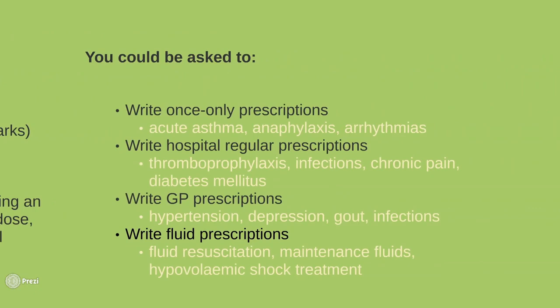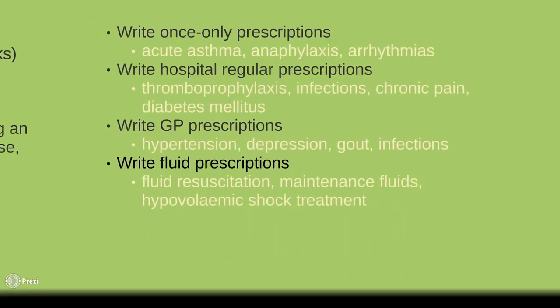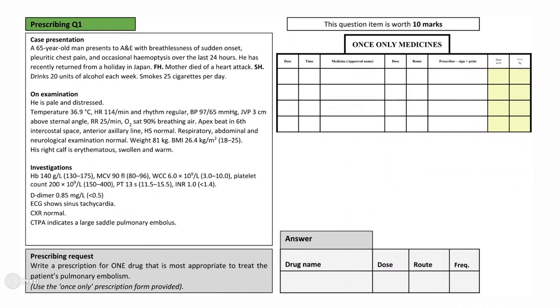So now that the basics of this section have been covered, let's place this into context by walking through some questions. Question 1: This is a 65-year-old man who presents to A&E with sudden onset breathlessness, pleuritic chest pain, and occasional hemoptysis over the last 24 hours. He has recently returned from a holiday to Japan. He has no past medical history of note and is not on any medications. His mother died of a heart attack. He drinks 20 units of alcohol each week and smokes 25 cigarettes per day. On examination, he is pale and distressed. Of note, he is tachycardic, hypotensive, tachypneic, and hypoxic. His apex beat is laterally displaced and the heart sounds are present.